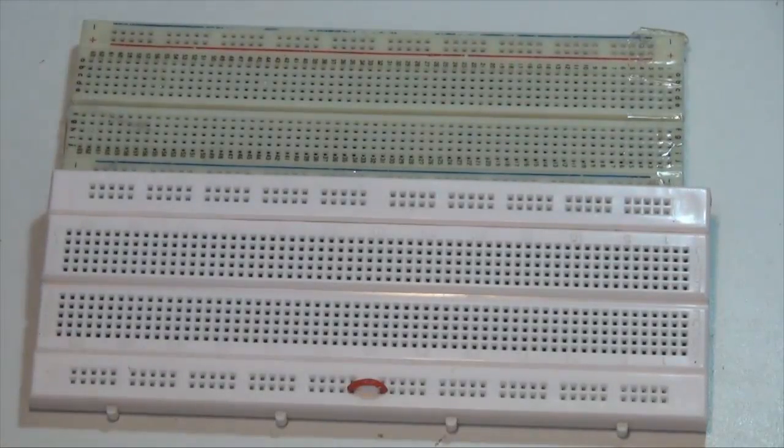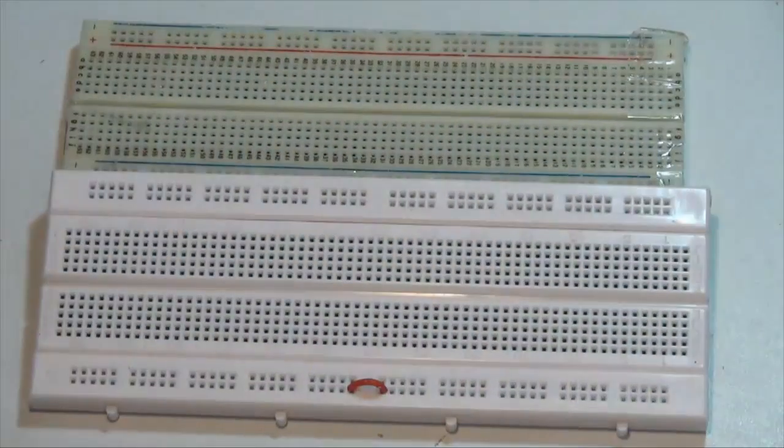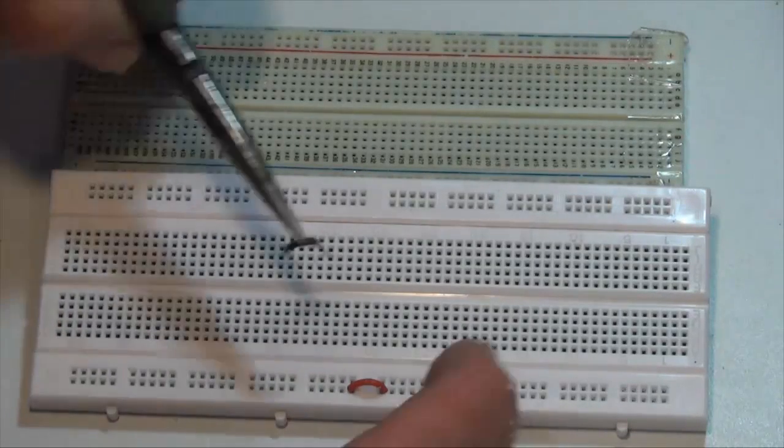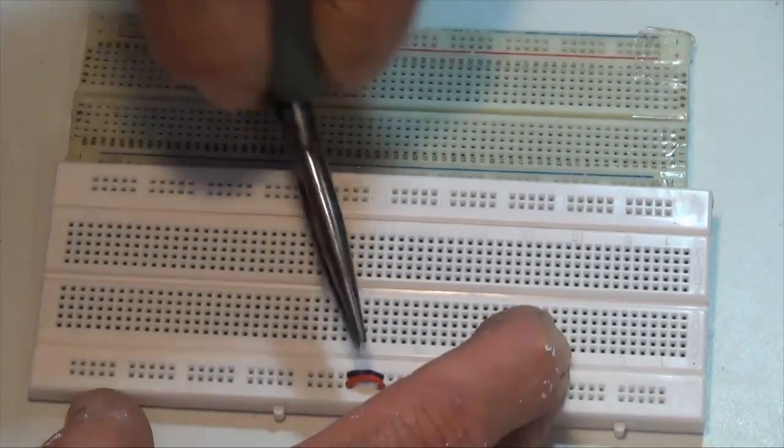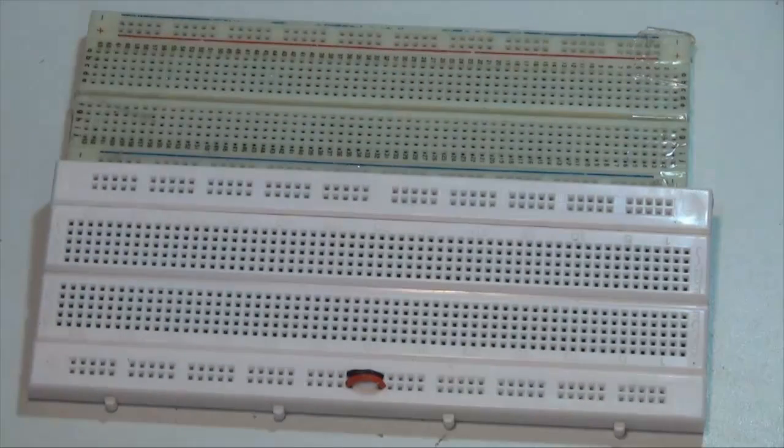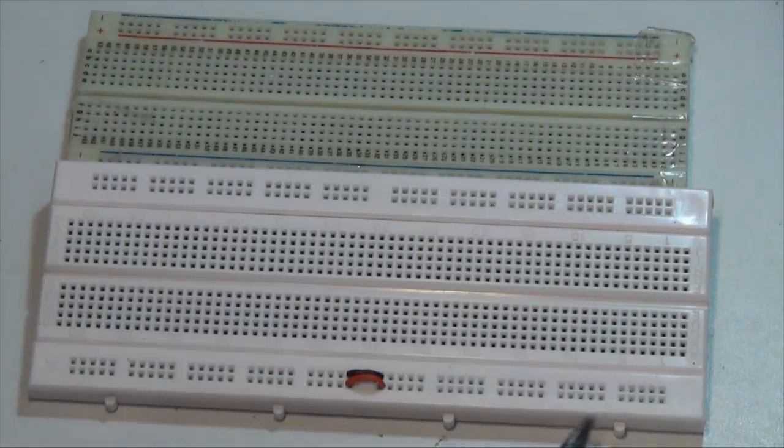Like that. So red for positive, and black for negative, if that's what you'd like to do. There we go. So now I have all of these square holes connected all the way across.